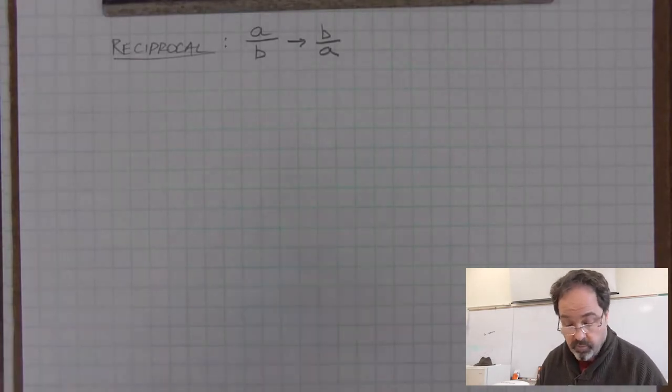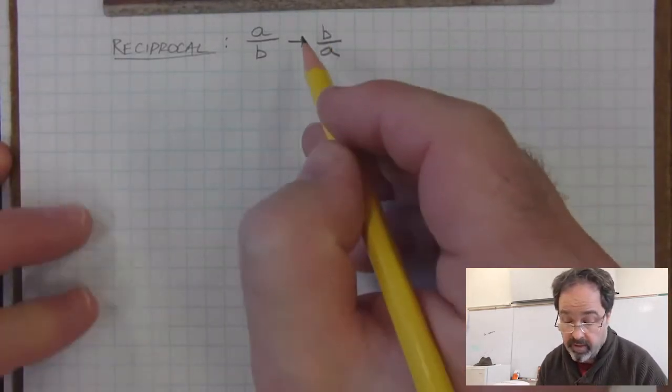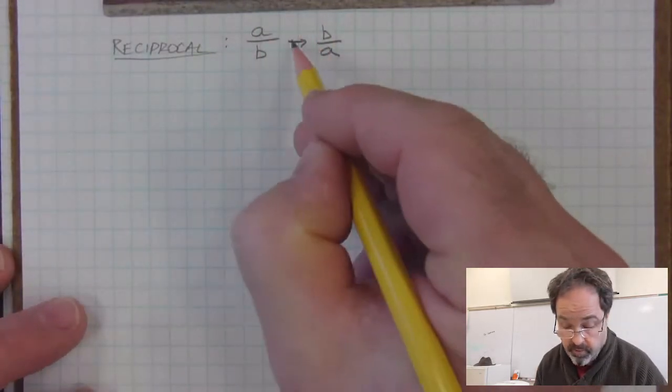And of course, reciprocals are reciprocals of each other. So if we had b over a, the reciprocal of it would be a over b.